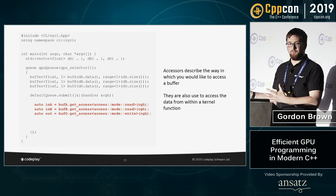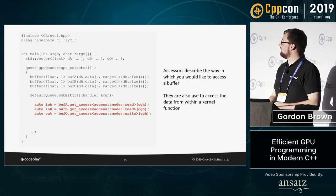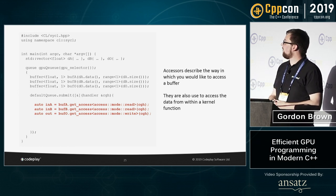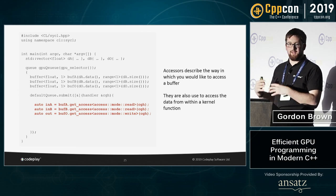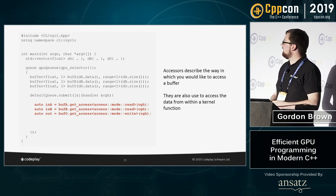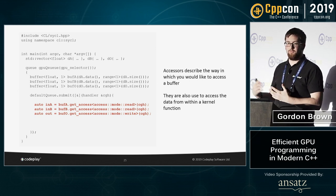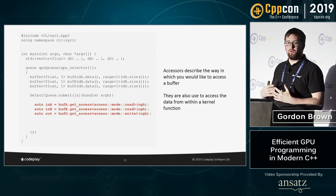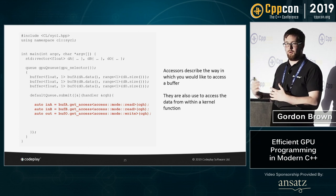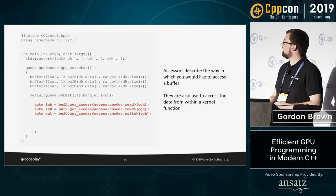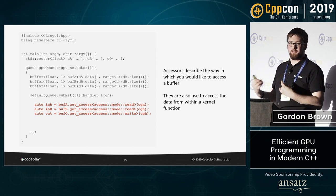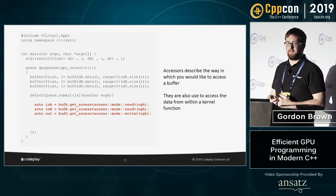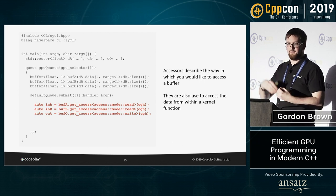To request access to a buffer in a kernel, you create accessors, which have various parameters describing how you want to access it. The most important is the access mode — whether you want to read or write — which allows the runtime to optimize scheduling and automatically create data dependencies. Accessors are also used inside the kernel to access data.